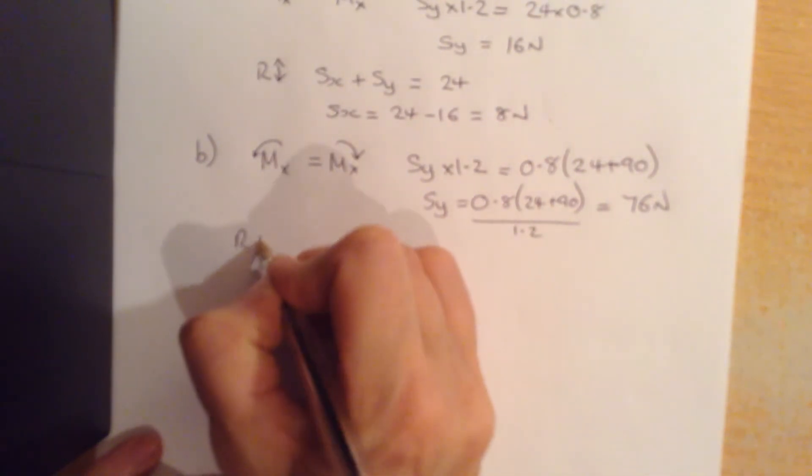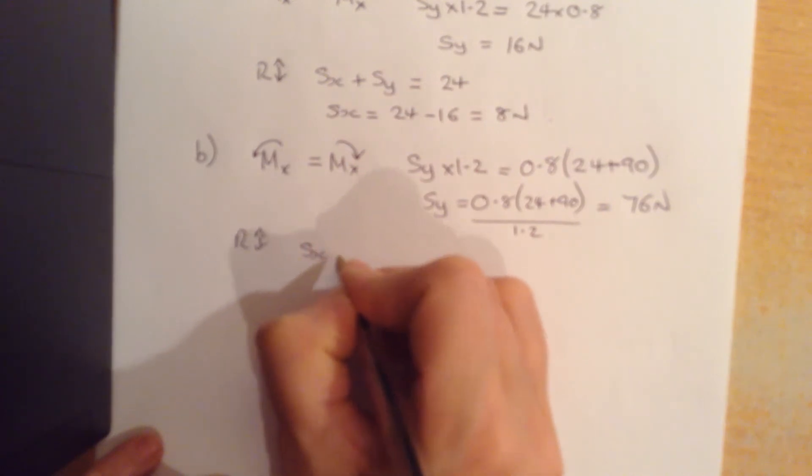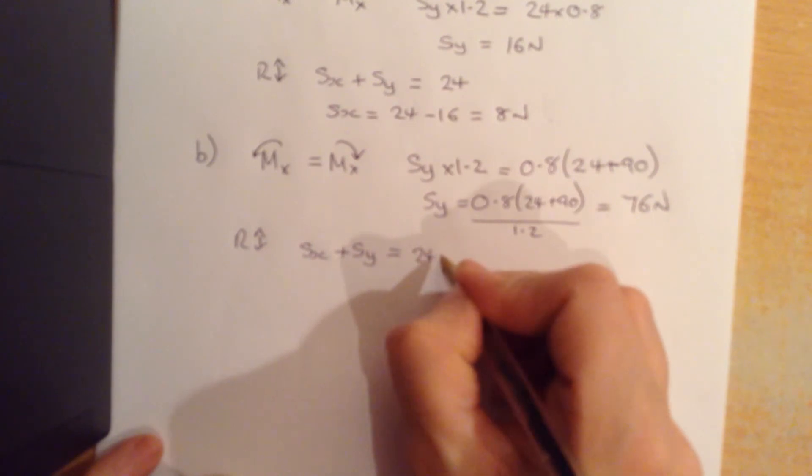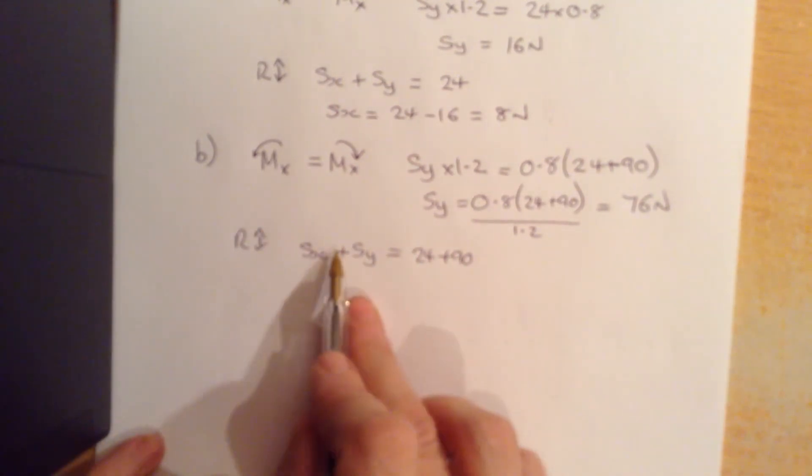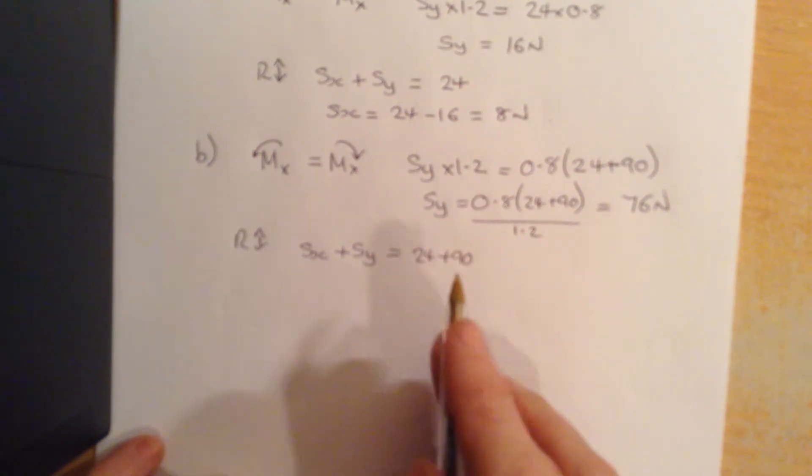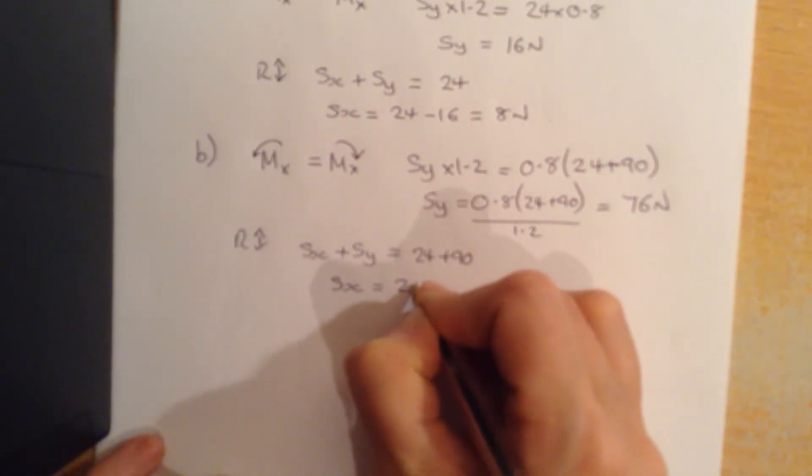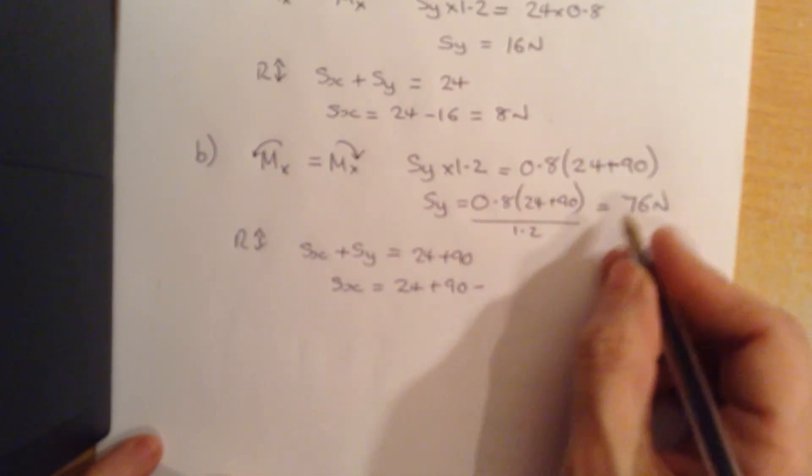So doing the same as we did before, SX plus SY equals 24 plus 90 this time. So resolving vertically, the upward forces balance the downward forces, which is SX equals 24 plus 90 take away SY which is 76. So that will come out to be 38 newtons.